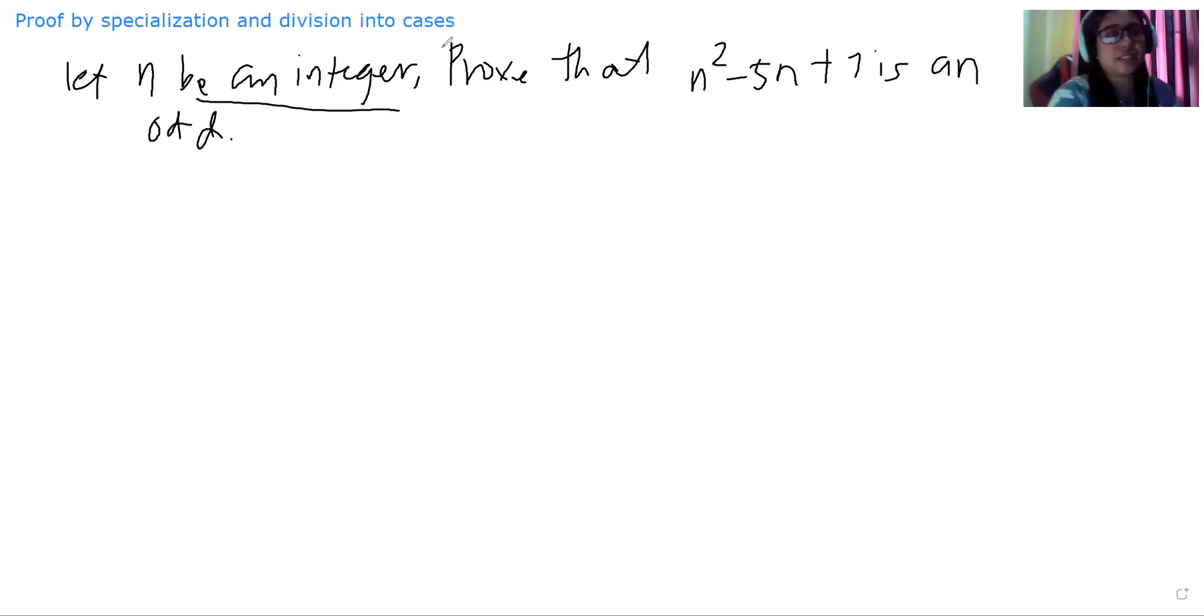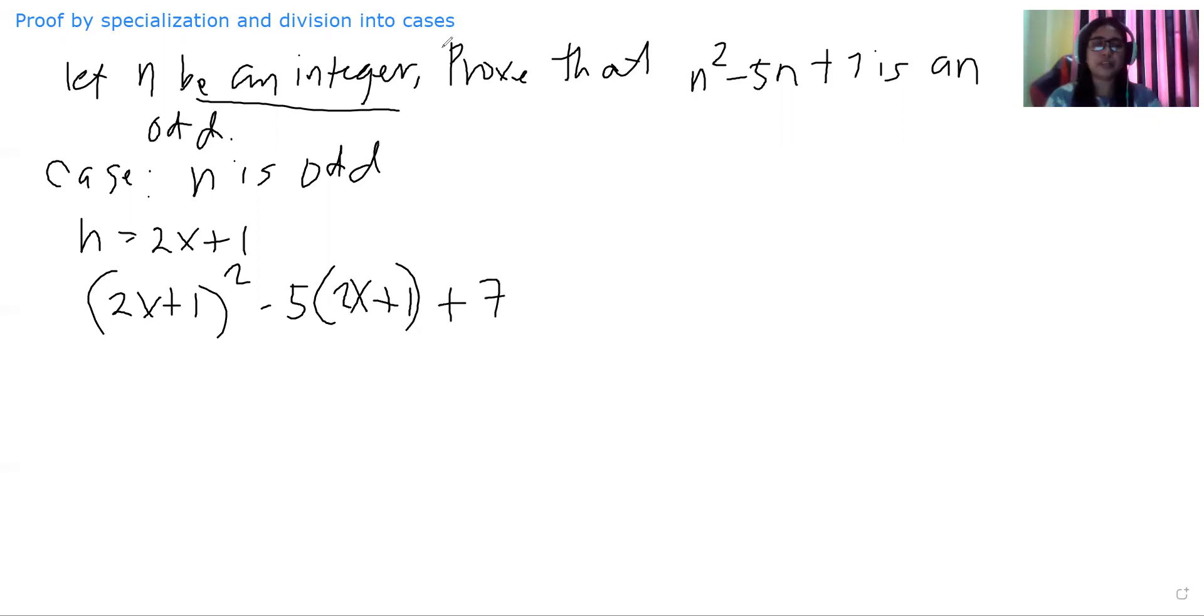So we will do both cases. For case 1, if n is odd, we are going to let n be equal to 2x plus 1 and then substitute this in place of n in our equation n squared minus 5n plus 7. So we have 2x plus 1 squared minus 5 times 2x plus 1 plus 7. Now we will just expand this, and the square of 2x plus 1 is equal to 4x squared plus 4x plus 1.